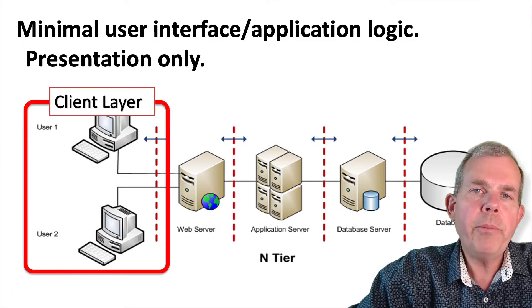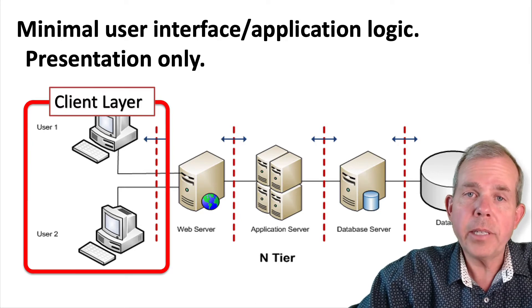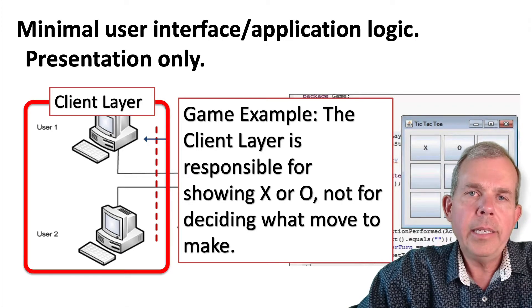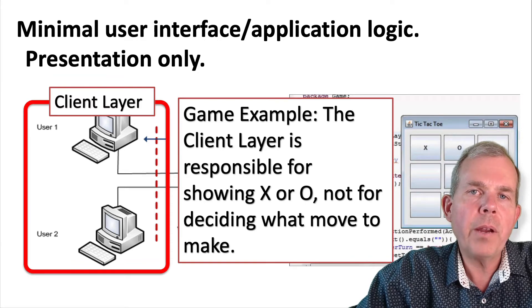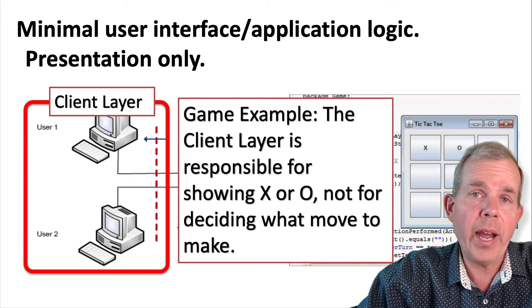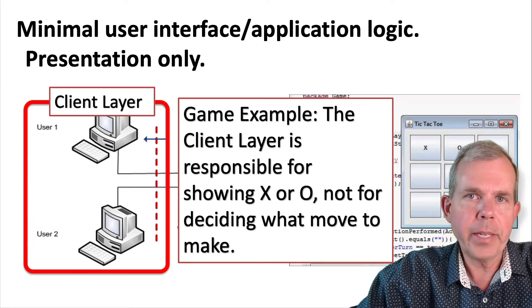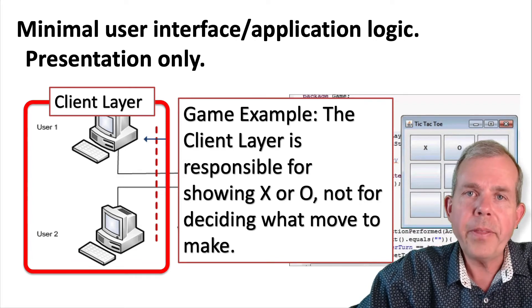We're going to try to keep the job here as only one task. What is the task of the client layer? It's to show data. We should not have logic, processing, or heavy lifting going on here for the CPU. For example, let's say we have a tic-tac-toe game — the client is going to display X's and O's and maybe some buttons. But figuring out what move comes next, checking if the game was won or lost, or if a move was valid — those are all logic questions that go in a different layer. The presentation layer takes whatever was given to it and displays it on the screen.